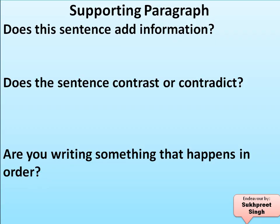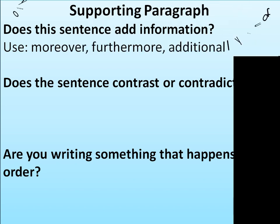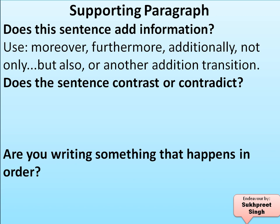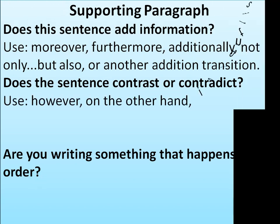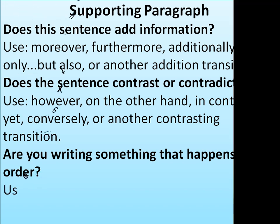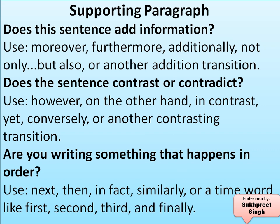Supporting paragraphs include three kinds of information. First, when adding information, use words like: 'moreover,' 'furthermore,' 'additionally,' 'not only but also,' or another addition transition. If the sentence contrasts or contradicts, use: 'however,' 'on the other hand,' 'in contrast,' 'yet,' 'conversely,' 'nevertheless,' or another contrasting transition. If writing something that happens in order, use phrases like: 'next,' 'then,' 'in fact,' 'similarly,' or time words like 'first,' 'second,' 'third,' and 'finally.'